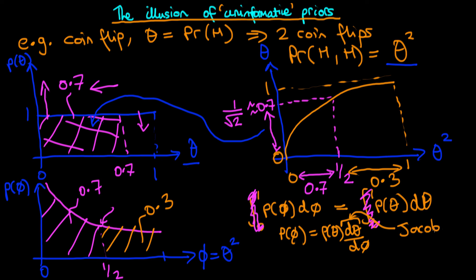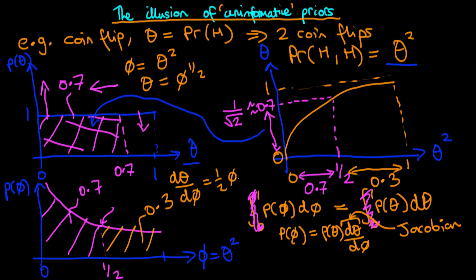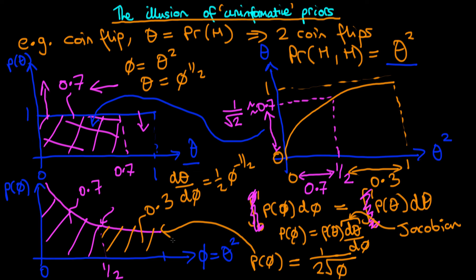To obtain d theta over d phi: since phi equals theta squared, we rearrange to get theta equals phi to the power of one half, then differentiate to obtain d theta over d phi equals one half times phi to the minus one half. Therefore p of phi equals p of theta — which is just one — times d theta over d phi, giving p of phi equals one over two times the square root of phi. This is the downward-sloping curve we drew, so we've obtained mathematically what we obtained hand-wavingly.